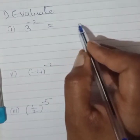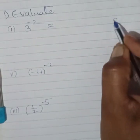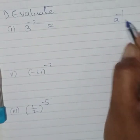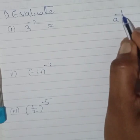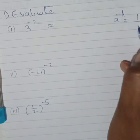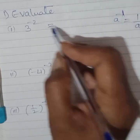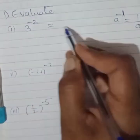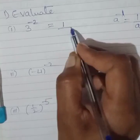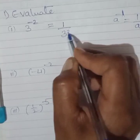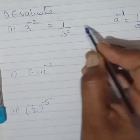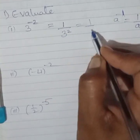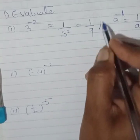3 raised to minus 2. See, something like this: A raised to minus 1 is 1 upon A. In the same way, we have here 3 raised to minus 2. It can be written as 1 upon 3 raised to plus 2. So, it is equal to 1 upon 9, and this is the answer.